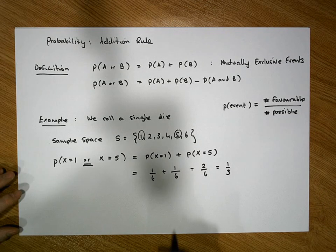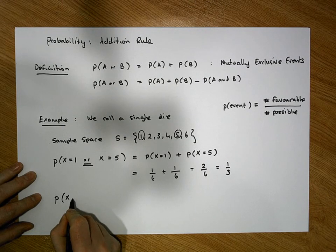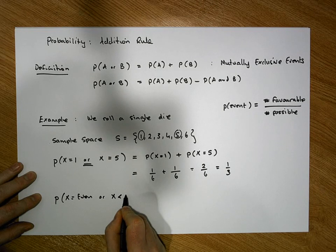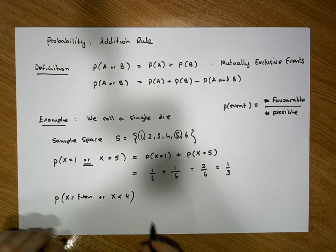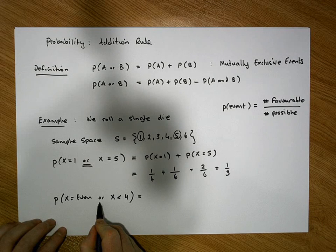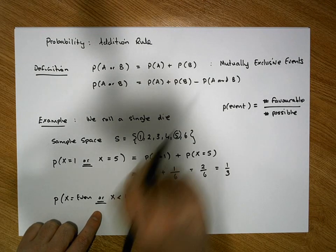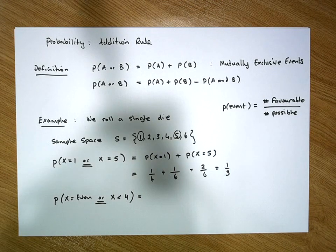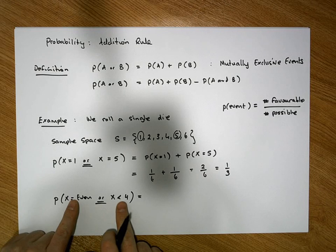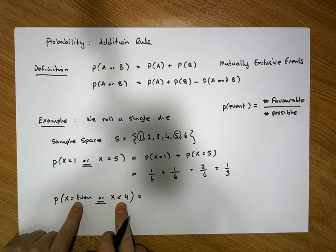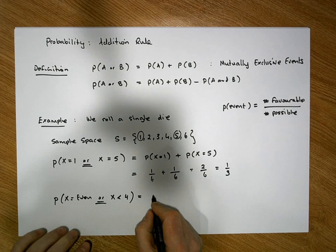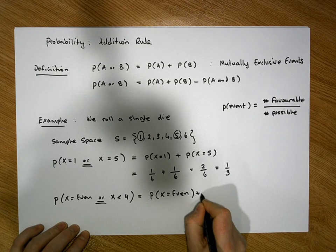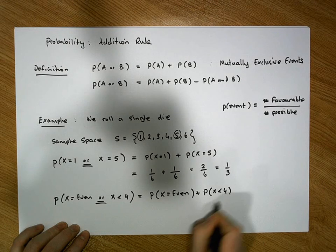Let's do another experiment. What is the probability that when I roll a die I get an even number, or I get a number less than four? Once again we're using the word 'or,' so we know we're in the addition rule, and at minimum we're going to add the individual probabilities. This becomes P(even) plus P(less than 4).